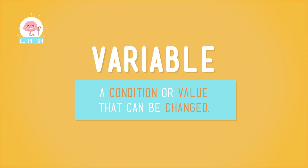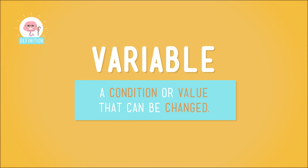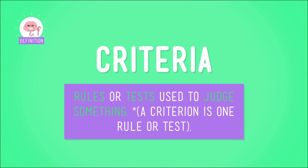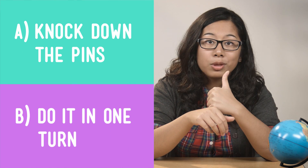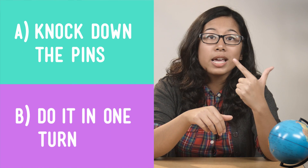First, you'll remember that we talked about variables — things we could change in order to, in this case, get a strike in bowling. And we also set the criteria that we can use to determine if we get a strike. In this case, those criteria are: A, we have to knock down the pins, and B, we have to do it in just one turn. A challenge, maybe, but we totally got this.